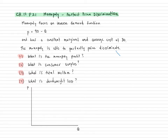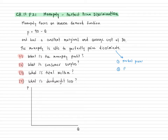In order to price discriminate, a few things have to be true. The first is the firm has to have market power — meaning the firm has the ability to set the price above the marginal cost. So it has to be a firm with some monopoly power, which means just about any firm except a perfectly competitive firm. The second thing is that the consumers the firm faces must have different willingness to pay, or we usually say different reservation prices.